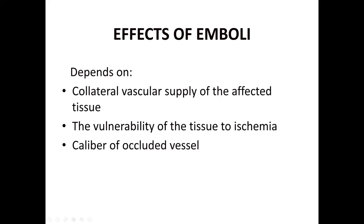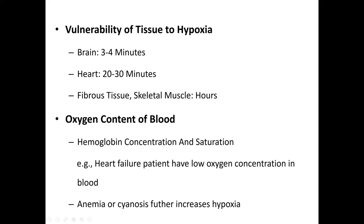Effects of emboli depend on collateral vascular supply of the affected tissue, vulnerability of the tissue to ischemia, and caliber of the occluded vessel. Organs and their tolerance to hypoxia: brain — 3 to 4 minutes; heart — about 20 minutes; fibrous tissue and skeletal muscles — for hours. Also relevant is the oxygen content of blood, hemoglobin concentration and saturation — for example, heart failure patients have low oxygen concentration in blood, and anemia further increases hypoxia.